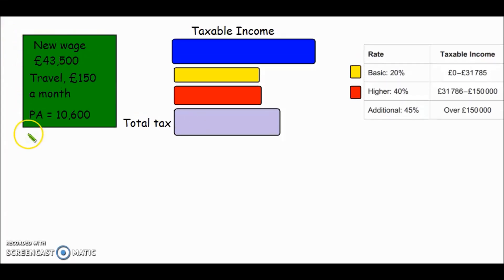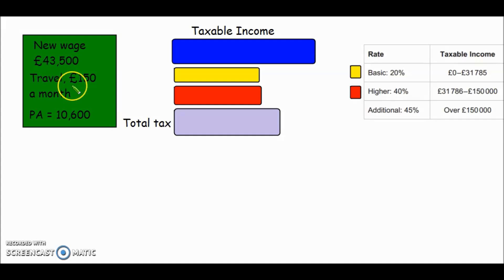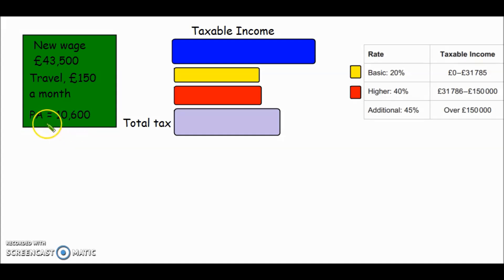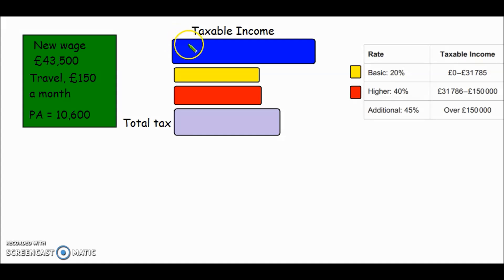I've summarized the key points here: the new wage is £43,500, she has to pay £150 for travel per month, and her personal allowance is £10,600 — the amount of her wage that we can't apply tax to. To work out how much money she actually earns, we've got to take off her income tax, so let's look at the table that helps us do that.